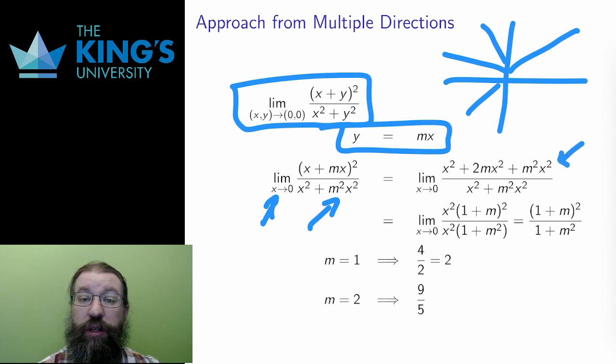With that replacement, I can do some algebra here: multiplying out, factoring out the x², and cancelling off, and I get this expression for the limit. M is the slope of the line of approach.